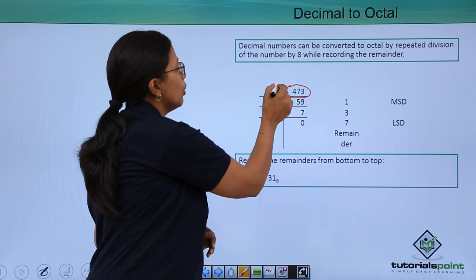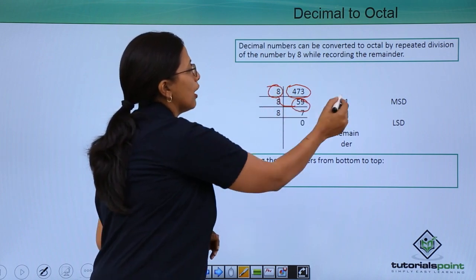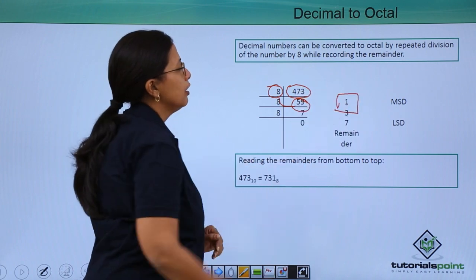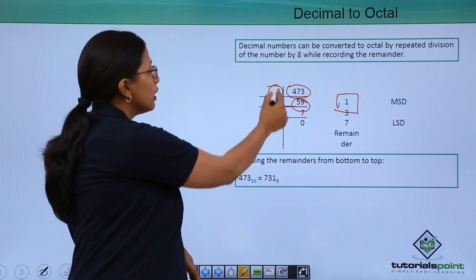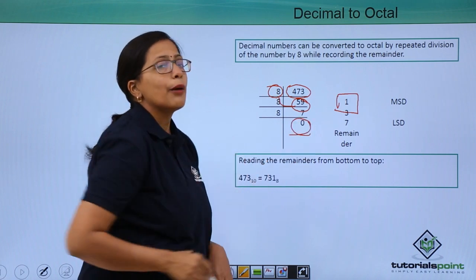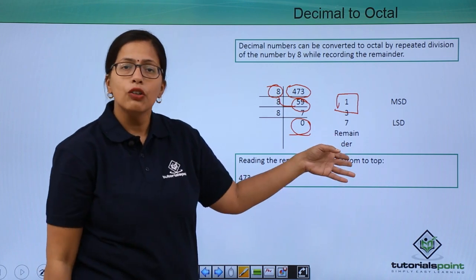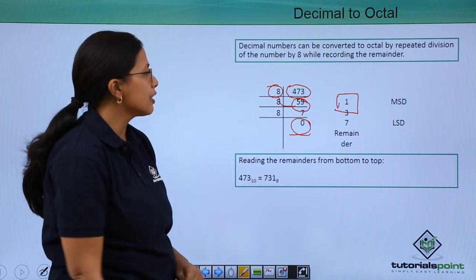We have the number 473 here. We will divide it by 8, record our quotient and our remainder. We will go on doing this till we get the number 0 as our quotient. Whatever is the remainder will be recorded here.